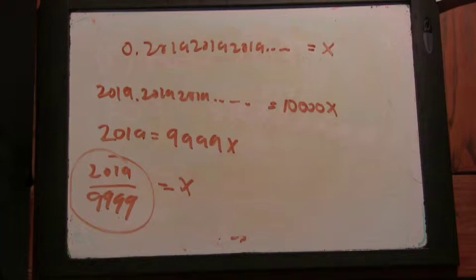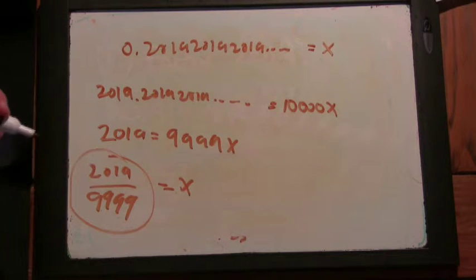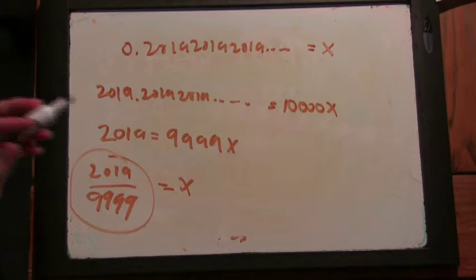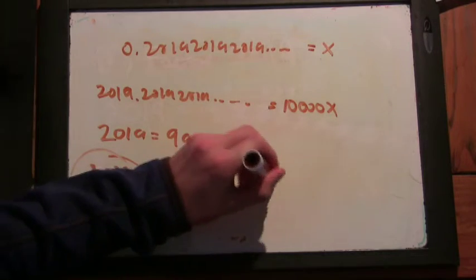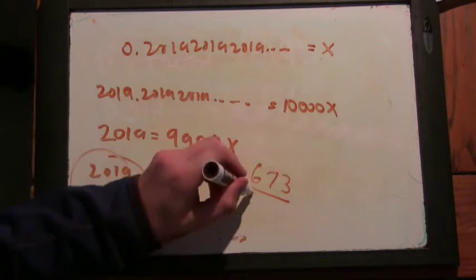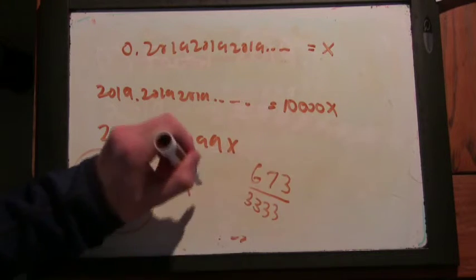this isn't in lowest terms because we know 2019 is 3 times 673. So we cancel the 3. 673 over 3333.